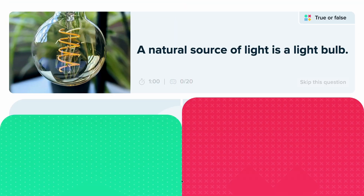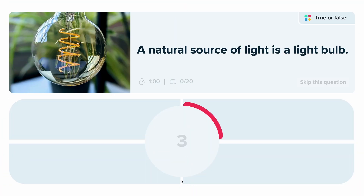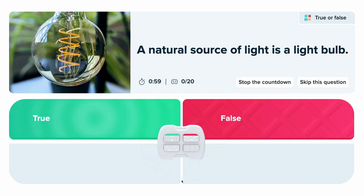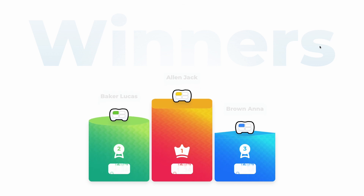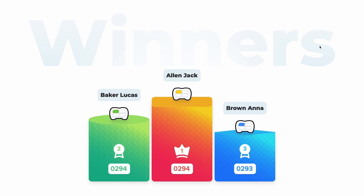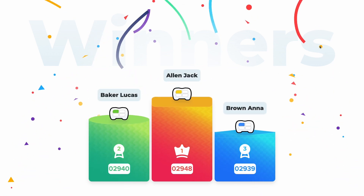The next available option is the true-false type of questions, where only the top two buttons on the class pads will be activated. There are two additional options on the screen: using the first one, you can shorten the time to give your answer; the second allows you to skip the question altogether, and no one will receive points for it. At the end of the quiz, you will see the podium, followed by the final ranking screen.